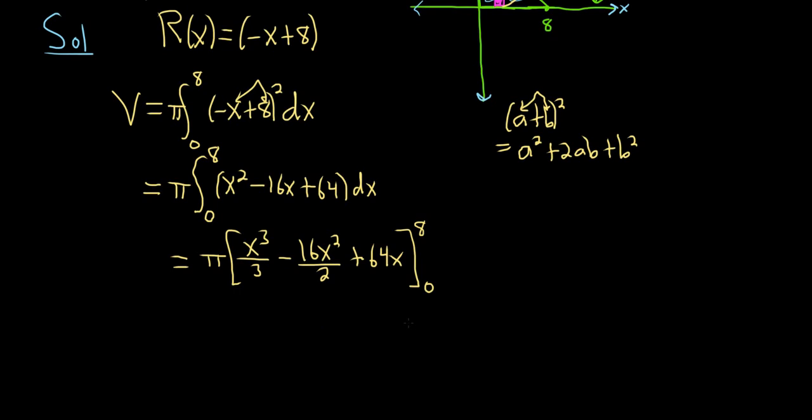Let's keep going. You plug in the 8 first. I'm going to leave the pi on the outside, so pi bracket: you have 8 cubed over 3, minus 8 times 8 squared, plus 64 times 8, minus 0. When you plug in 0, you subtract and plug in 0s for all these x's, but they all go away, so good stuff.